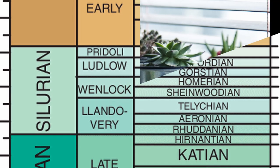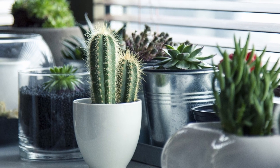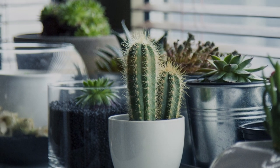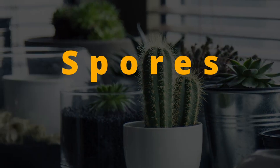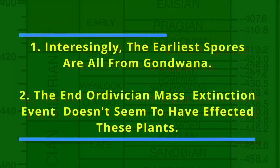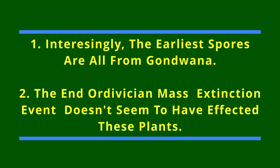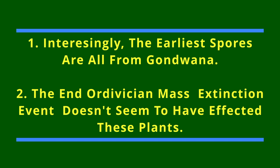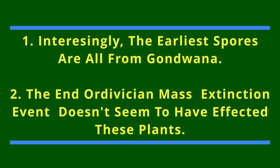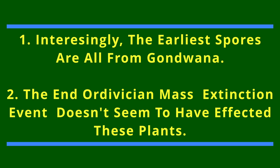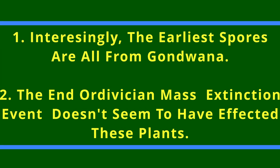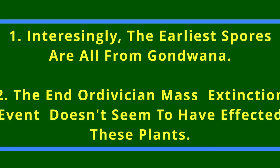While not going back as far as microbes on land do, land plants themselves almost assuredly started their story earlier than the Silurian as well. The evidence for pre-Silurian land plants doesn't come from fossil plants themselves, but rather from their spores, which appear first in the middle Ordovician and continue through the Silurian and beyond. Interestingly, the earliest spores are all from Gondwana. There's another interesting thing about the history of these early land plant spores: the end-Ordovician mass extinction event — well, the fossil spores we're talking about continue through this period and beyond without any signs of being hit, and instead they're continually increasing in diversity.